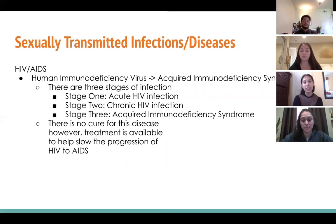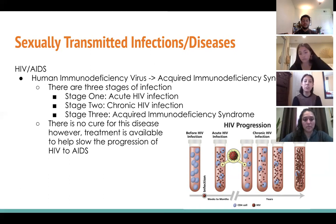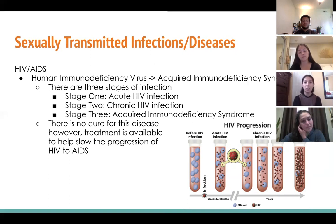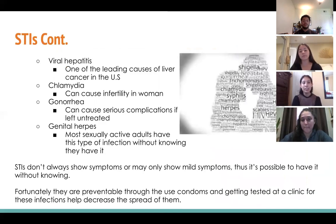Examples of sexually transmitted infections include HIV and AIDS. HIV stands for Human Immunodeficiency Virus, and AIDS stands for Acquired Immunodeficiency Syndrome. There are three stages: acute HIV infection, chronic HIV infection, and Acquired Immunodeficiency Syndrome (AIDS). There is no cure for this disease; however, treatment is available to help slow the progression of HIV to AIDS.